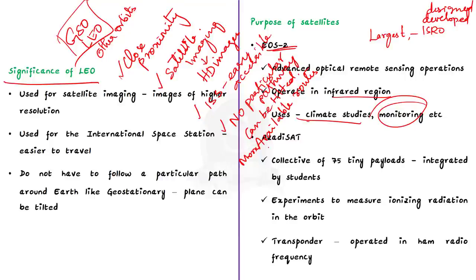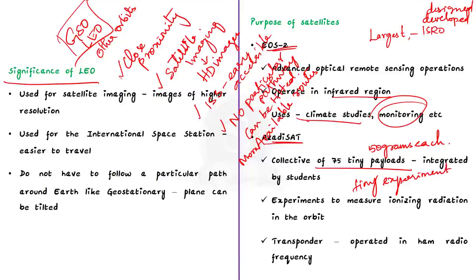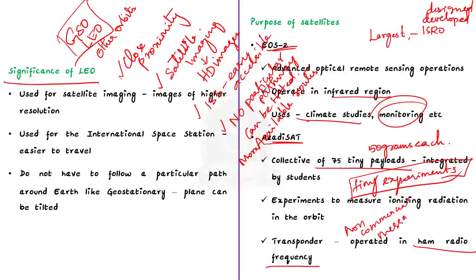The second satellite, Azadi Sat, was a collection of 75 tiny payloads weighing around 50 grams each, integrated by students. It carried tiny experiments which would have measured ionizing radiation in its orbit if placed correctly. It also contained a transponder working in the ham radio frequency, which helps in non-commercial exchange of messages and emergency communications.